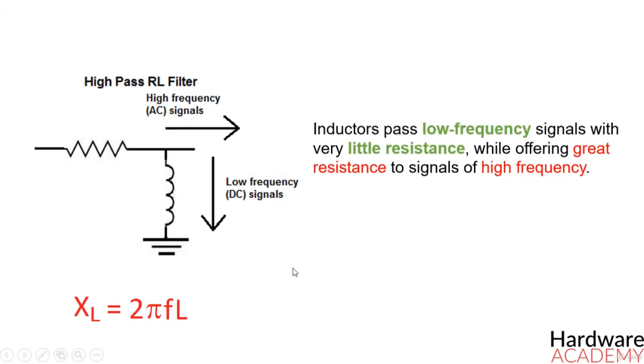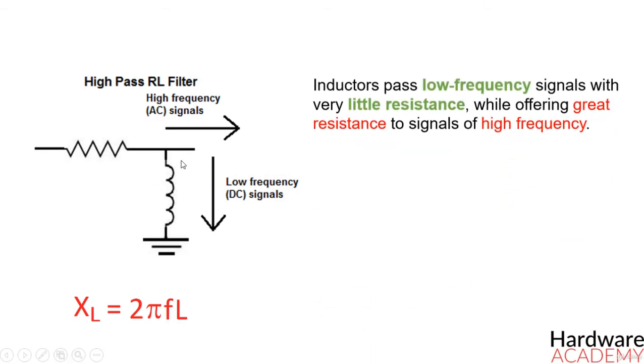Inductors pass low-frequency signals with very little resistance, while offering great resistance to signals of high-frequency. As a result, low-frequency signals pass through very easily without any attenuation, and high-frequency signals are either completely blocked or greatly attenuated as output.